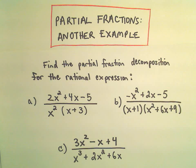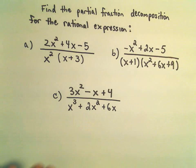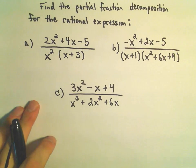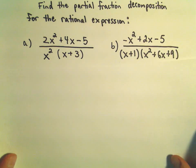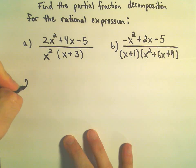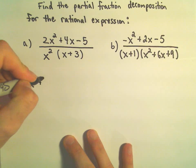Alright, so a few more examples here finding partial fraction decomposition. The first one I'm going to do here is 2x squared plus 4x minus 5 over x squared times x plus 3. So, write it down here.